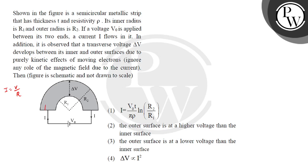So we assume we have a strip. Assume we have a strip at distance x from the center, with a small thickness dx. We need to find the resistance of this elemental strip. Consider the current flow — find out the arc length.